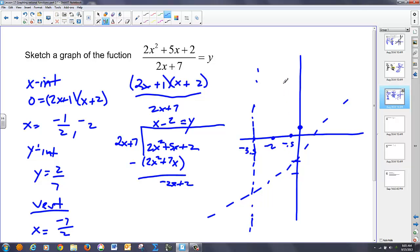Very similar to that first problem we did. It's got to come down. Cross. Go through. Approach. On this side it's not going to cross the axis. So somewhere over here. Alright. Moving forward.